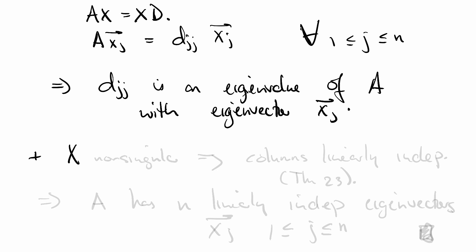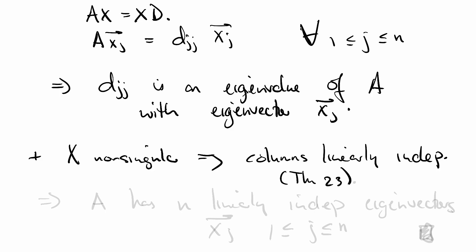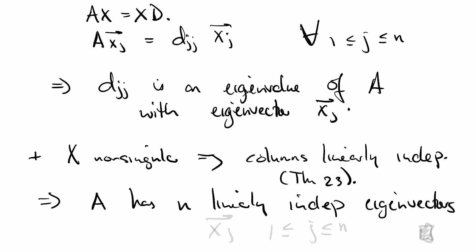We add the fact that X was non-singular. That, of course, means that its columns are linearly independent by theorem 23. So that means that A has n linearly independent eigenvectors, the x_j's, where j goes from 1 to n. That proves it. End of proof. QED.